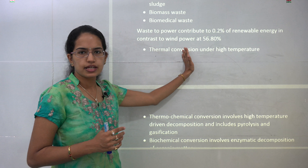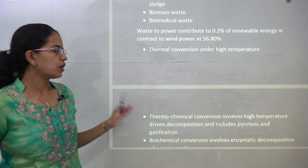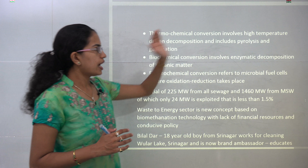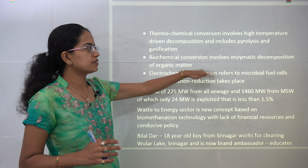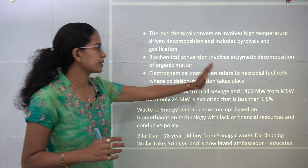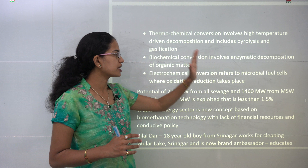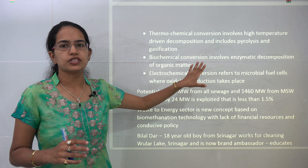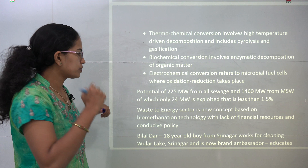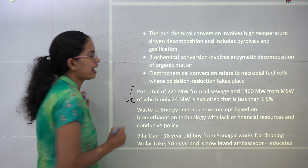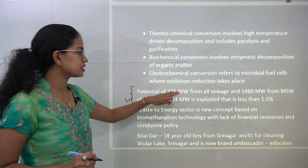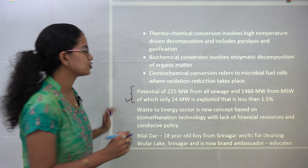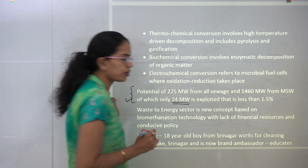Under urban waste, we talk about sludge, fecal matter, and municipal solid waste. Under industrial waste, we talk about hazardous and non-hazardous. In India, there are nearly 8 million tons of hazardous waste per year, of which Maharashtra and Gujarat are the highest contributors, and the top seven states form 82% of hazardous waste. Waste to power currently contributes only 0.2% — we need to increase this ratio as an innovative approach for power generation.